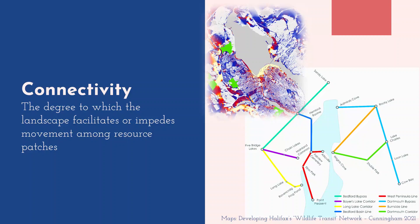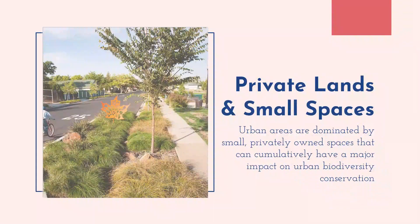The other form of connectivity planning in urban areas is to look at connections between core areas in order to facilitate movement through the urban core. This often requires consideration of private lands, small spaces, and unconventional green spaces. Most conservation efforts tend to happen on publicly owned lands, but given the nature of urban areas, the role of private lands cannot be understated. The intervening spaces between large core habitat patches are generally privately owned, making private land critical for providing connectivity through cities.